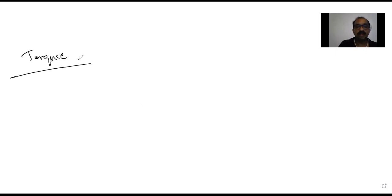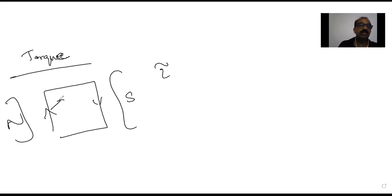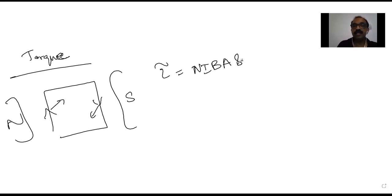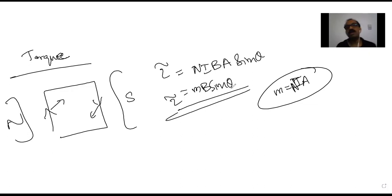Whenever a current loop is placed inside a perpendicular magnetic field, it experiences a torque. Two equal and opposite forces create this torque, given by τ = nIBA sinθ. Here, IA is the magnetic dipole moment of a single loop; with n turns, the dipole moment is nIA. This can also be written as τ = mB sinθ, where m is the magnetic dipole moment.